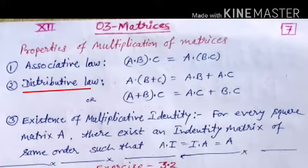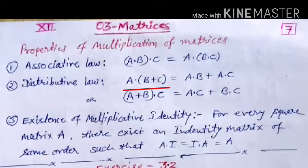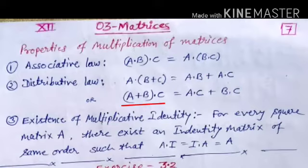Second is the distributive property. A into (B plus C) — it simply opens the bracket to A into B plus A into C. This is left multiplication. And for right multiplication: (A plus B) into C gives A into C plus B into C.